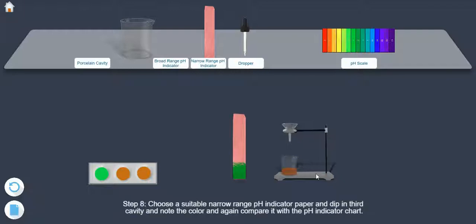Step 8: Choose a suitable narrow range pH indicator paper and dip it in the third cavity and note the color and again compare it with a pH indicator chart.